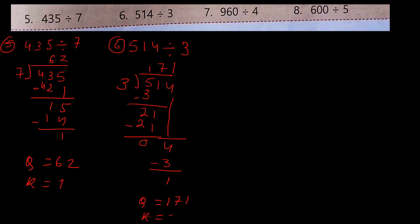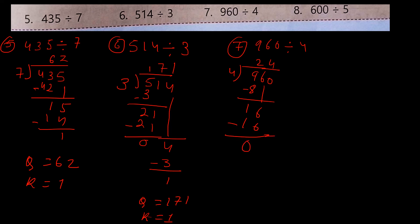Number 7: 960 divided by 4. 4×2=8... bring down 6 making 16. 4×4=16, here 0. Then bring down 0. 4×0=0, so 0 goes up. So Q is equal to 240, R is equal to 0.